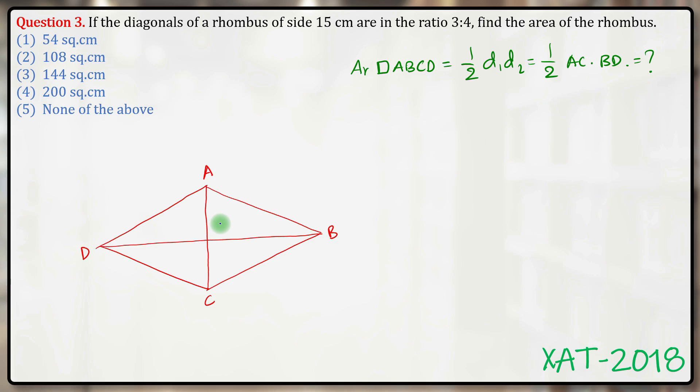By virtue of ABCD being a rhombus, we already know that AC and BD are perpendicular bisectors of each other. Therefore I can say this will be a right angle, these two parts will be equal and these two parts will be equal.